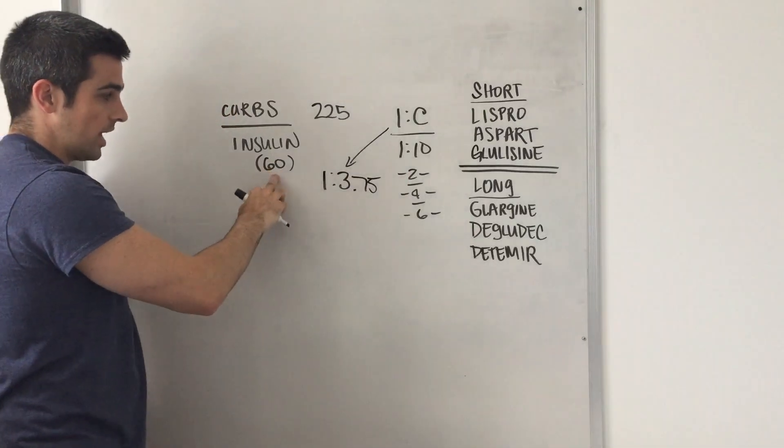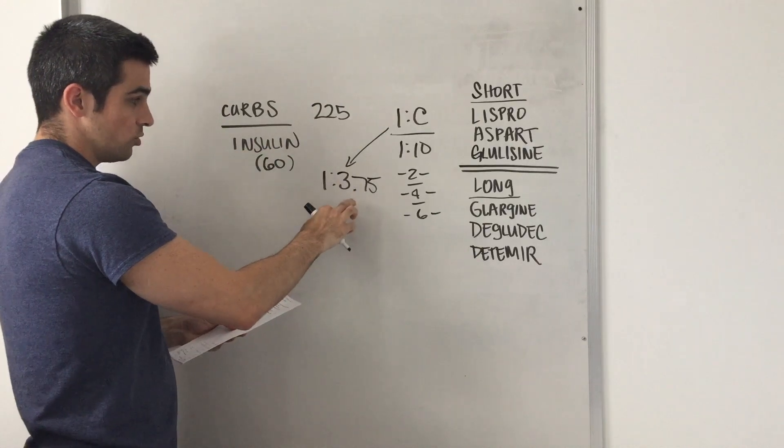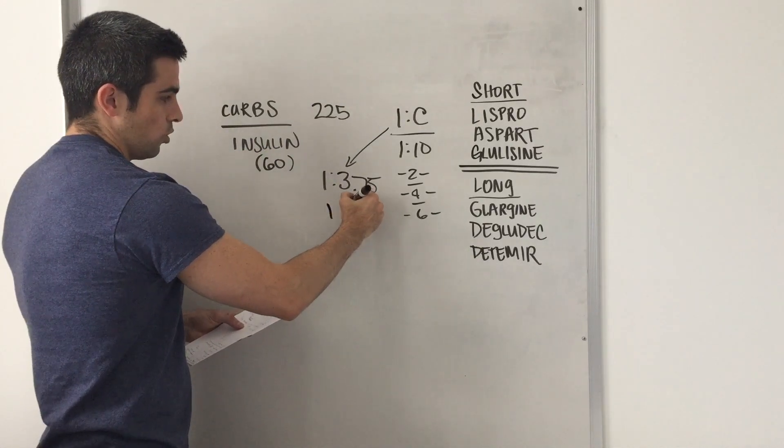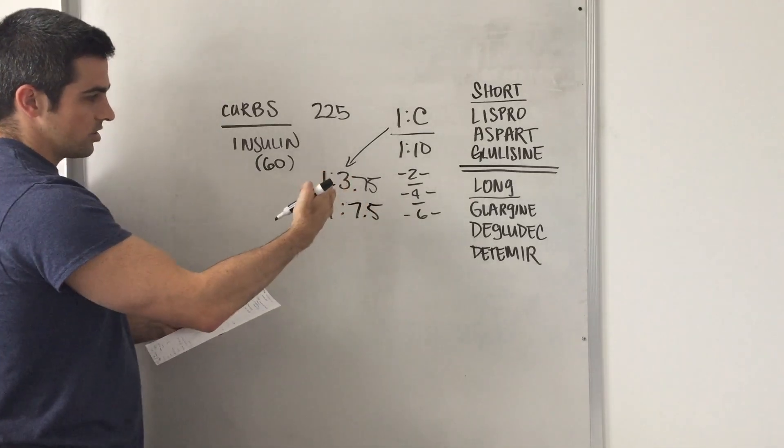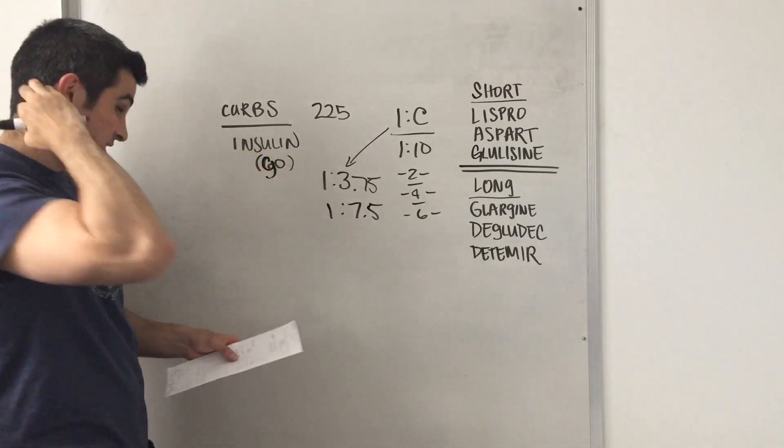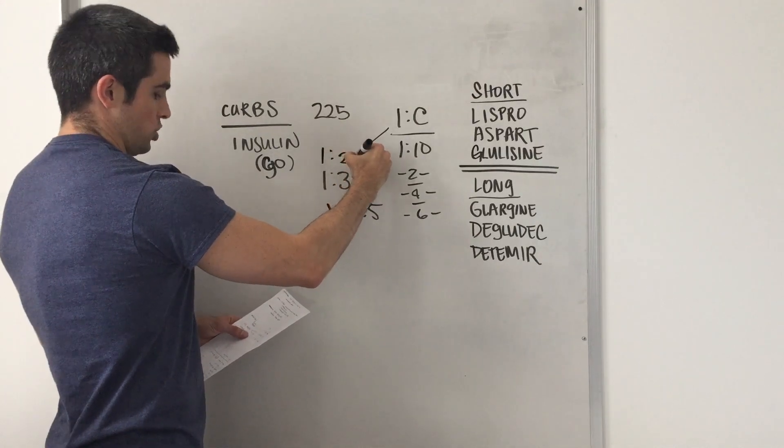And now if you change their prandial to go down to only 10 units, then their number would go down to 1 to 1.75. And if you increased theirs to 90 total, so you gave 30 units after every single meal, then you'd be looking at a ratio of 1 to 2.5.